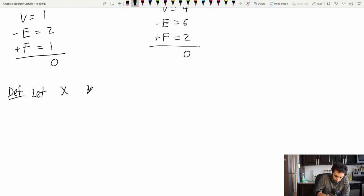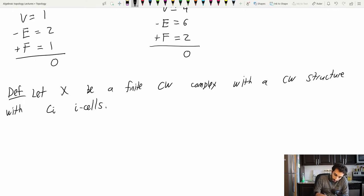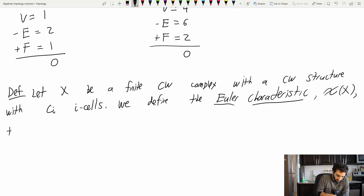Let X be a finite CW complex with a CW structure with Ci cells. We define the Euler characteristic χ(X) to be χ(X) is equal to the summation as i goes from 0 to N of minus 1 to the i times Ci. So in general, so this is the dimension of X.